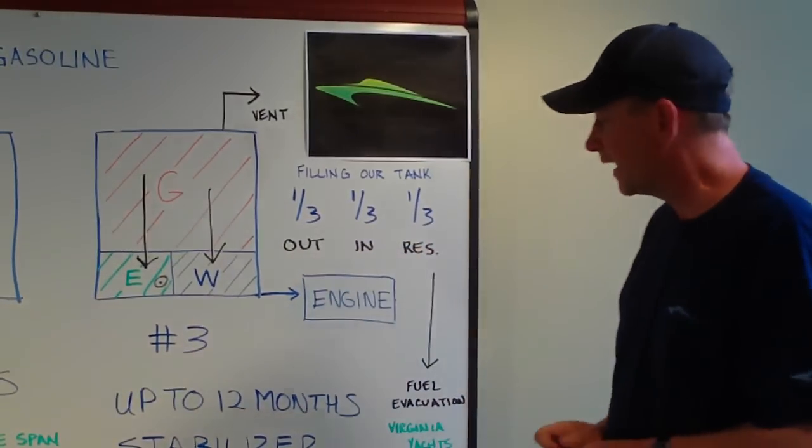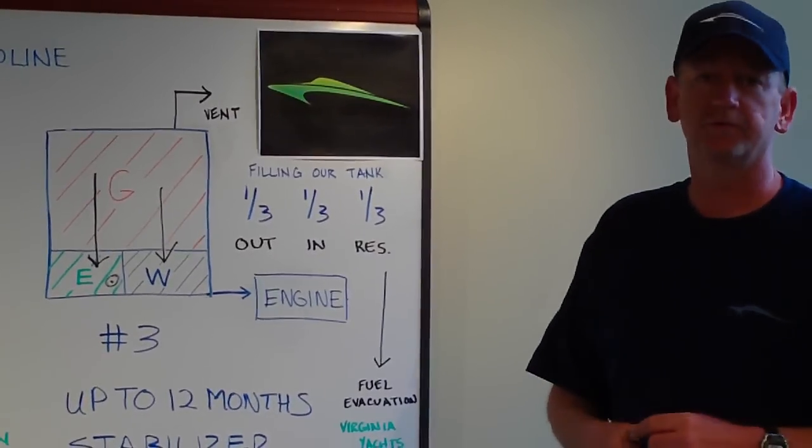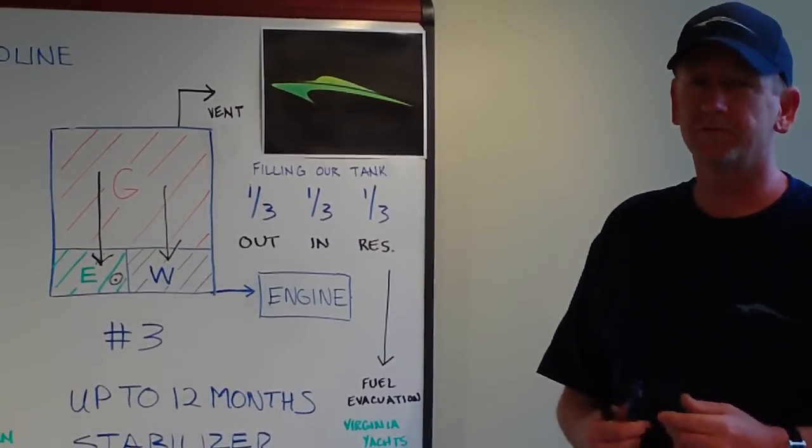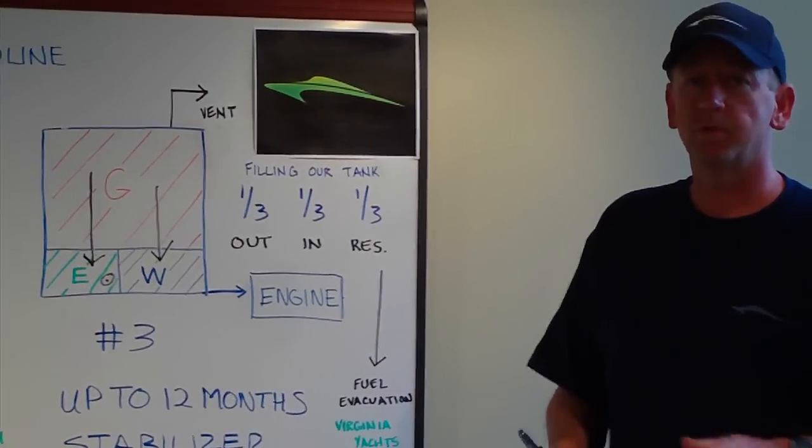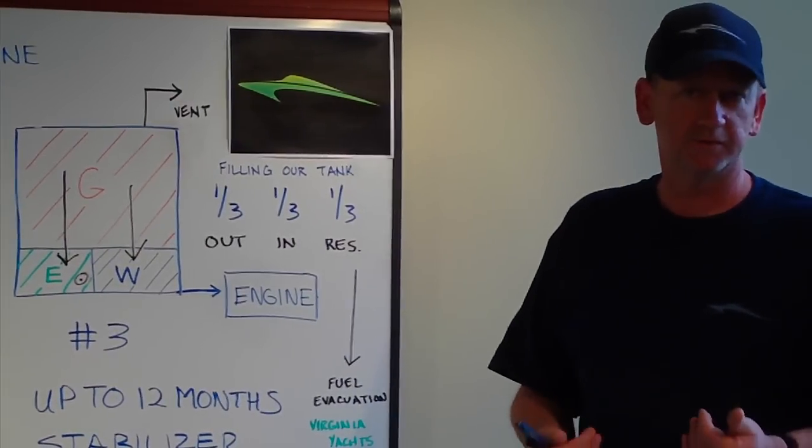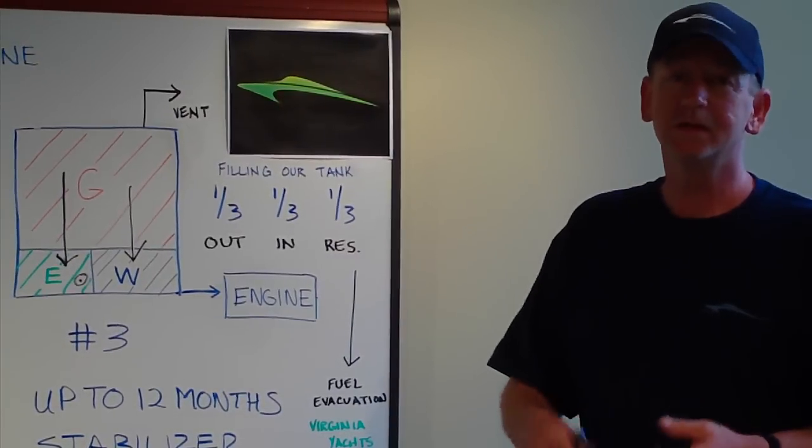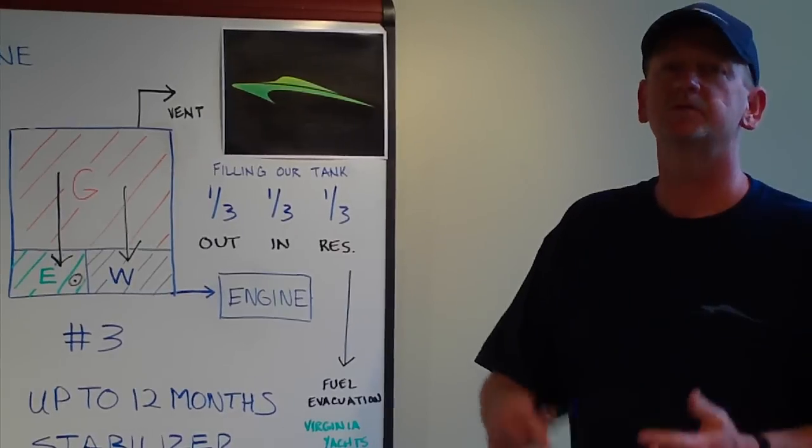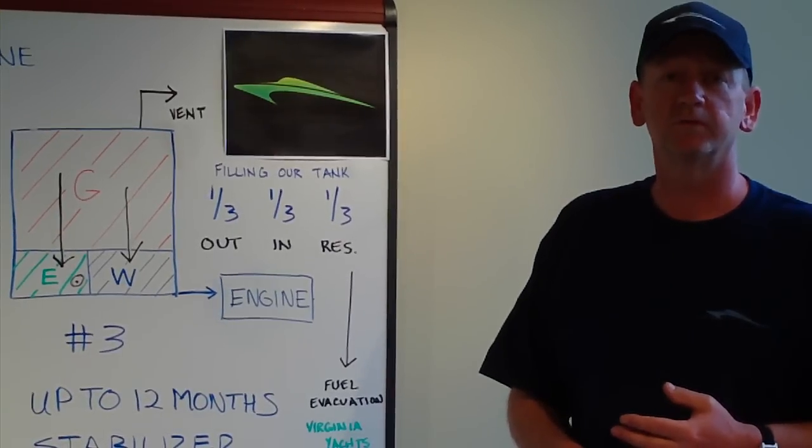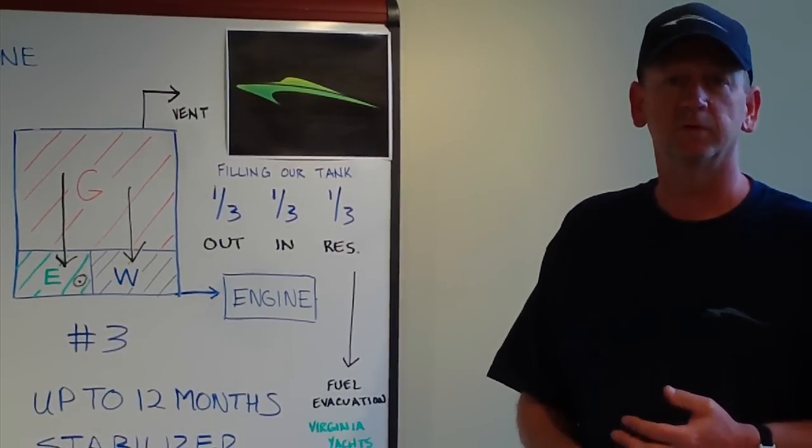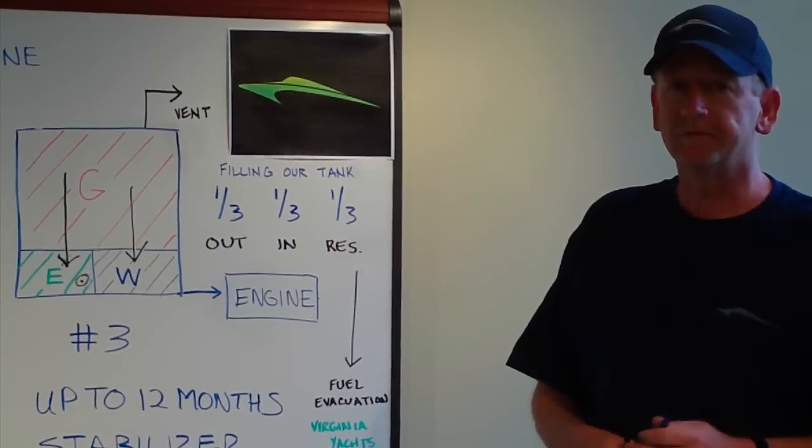So I think we've covered most of the high spots on fuel separation with ethanol fuel when it's blended with gasoline. The biggest point I want to make at the end of this session is, we want to try to fill up more often. We want to use stabilizer, and we want to use the one-third, one-third rule, so we don't fill the tanks completely full every time, just because we think it's necessary.